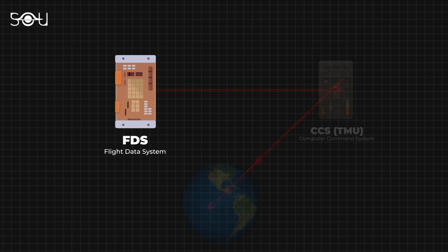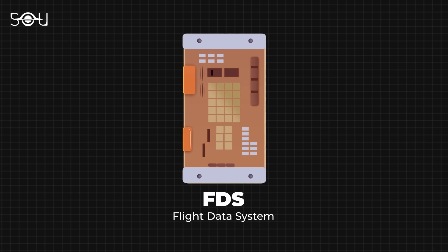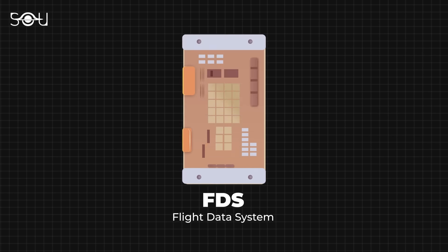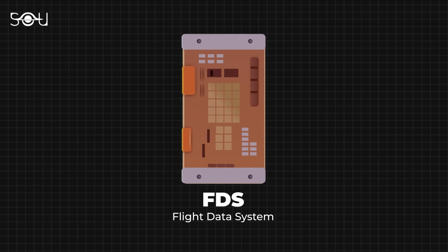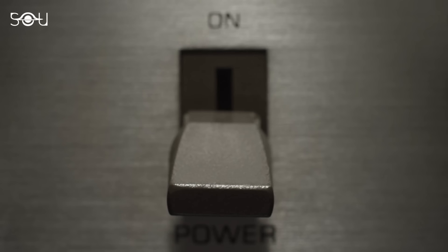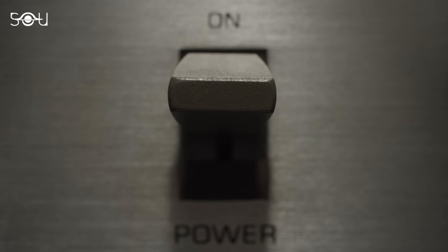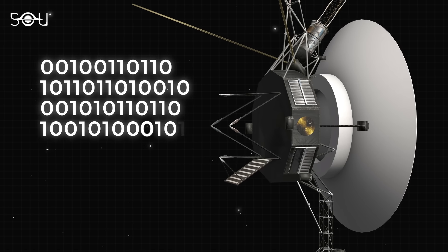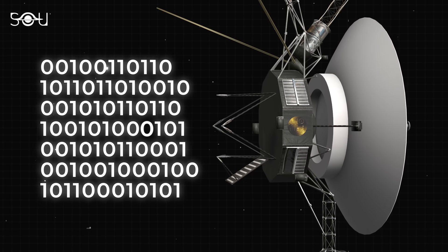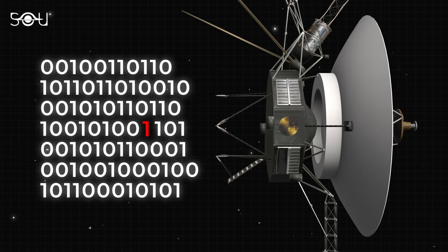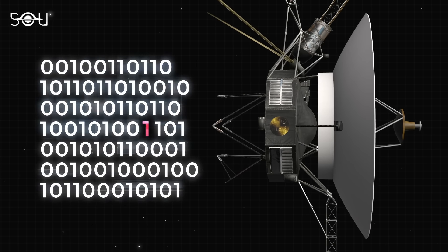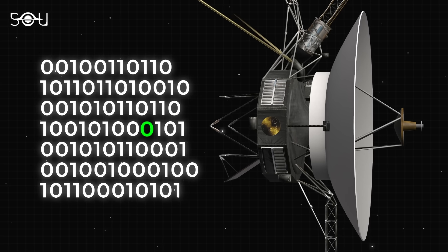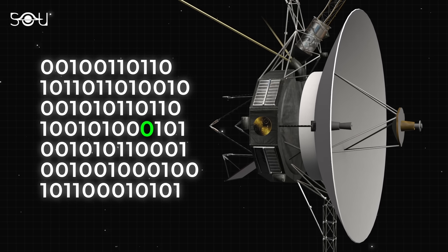Usually when such a problem arises, the first solution is to restart the FDS by turning it off and back on again. This approach often fixes most technological problems here on Earth and even in space. For example, back in 2010, when Voyager 2's data showed a similar issue due to a flip in one of the bits, the team performed a resetting command for the memory of the FDS, which successfully resolved the issue.